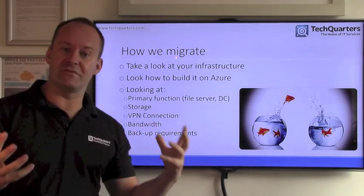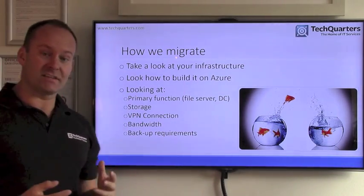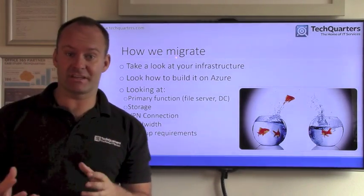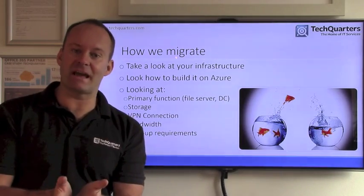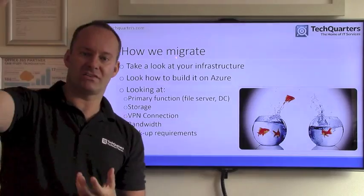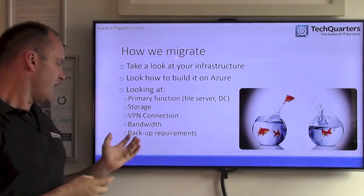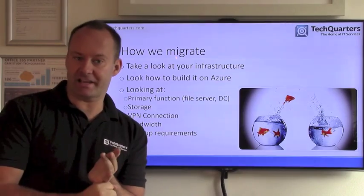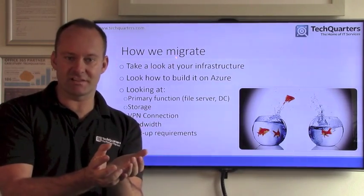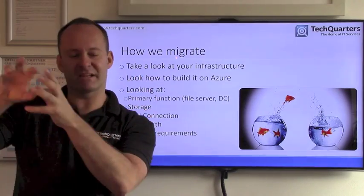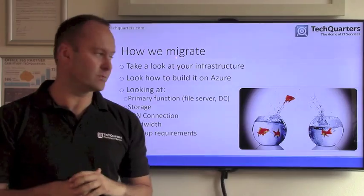We put the storage up there and we look at your VPN connections — how many sites will be connecting in? The next thing is bandwidth, which is one of the big cost variables. The amount of bandwidth you require: what are you actually accessing and how much are you going to be drawing down the line to connect to it? And then finally, what are the backup requirements? Do you want it to be locally redundant in the same data center, or do you want that data to be replicated on a geo-redundant basis to another continent? All of that is possible.